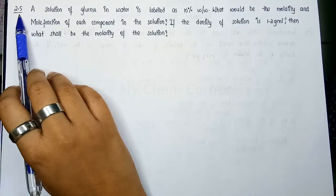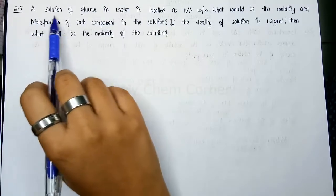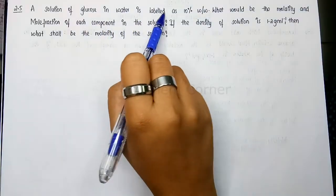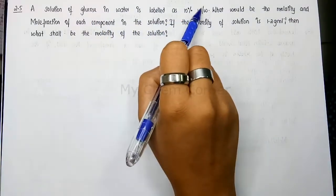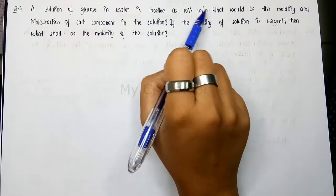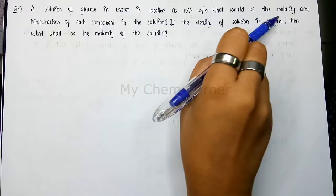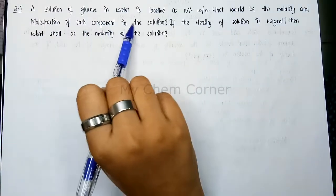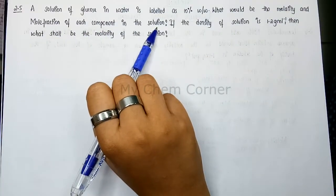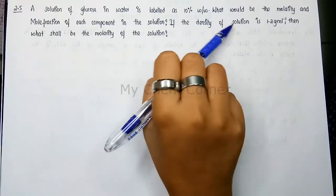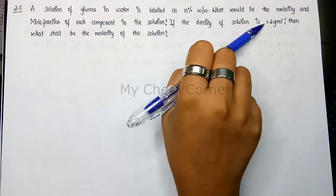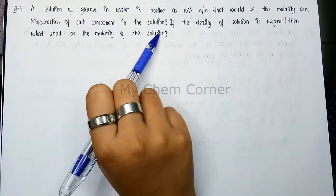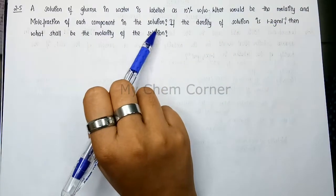Question number 2.5: A solution of glucose in water is labeled as 10% W by W (weight by weight). What would be the molality and mole fraction of each component in the solution? And if the density of the solution is 1.2 grams per ml, then what shall be the molarity of the solution?